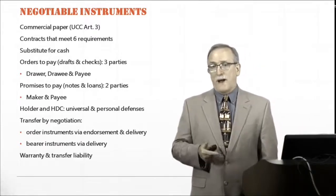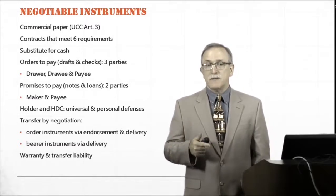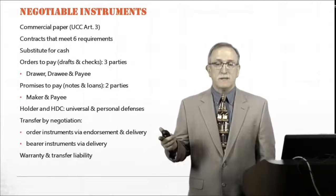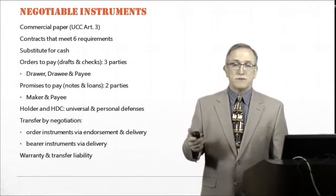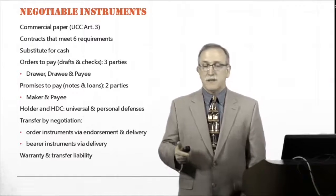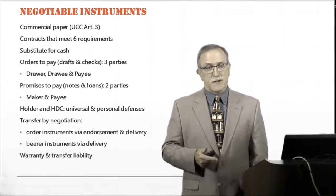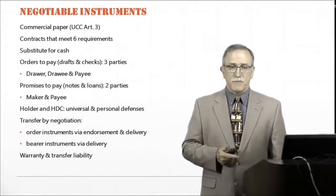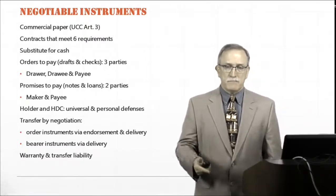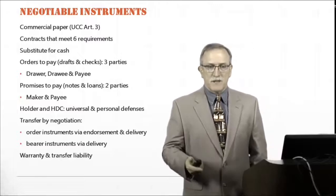This goes back to why you need to understand the different parties and the names involved because there are liabilities for endorsing an instrument. These are called endorsement liabilities. There are transfer liabilities as well. This is all discussed in your book. Order instrument is negotiated by endorsement and delivery.